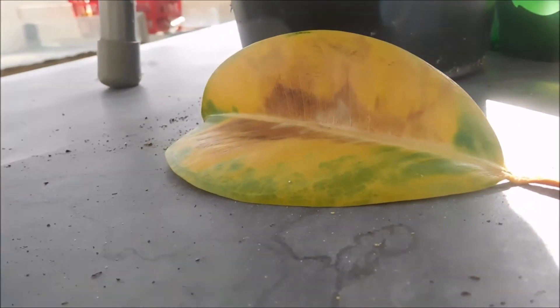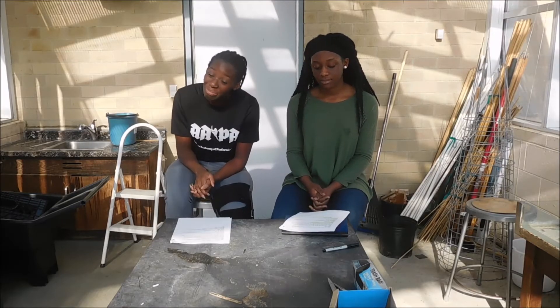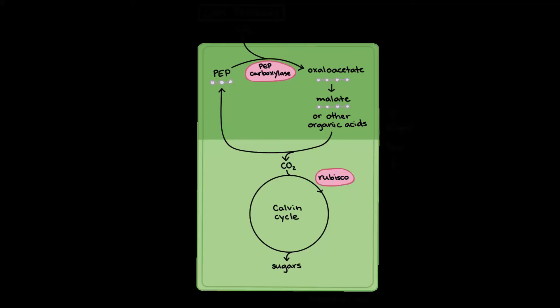On to CAM plants. CAM stands for crassulacean acid metabolism. CAM plants don't separate the light-dependent and independent reactions physically — they instead do them at different times. At night, CAM plants open their stomata, allowing carbon dioxide to diffuse into the leaves. This carbon dioxide is fixed into oxaloacetate by PEP carboxylase, just like in C4 plants. Unlike C4, CAM stores the malate in vacuoles until daylight, where it is transported out of the vacuole and broken down to release the carbon dioxide for the light-independent reactions.